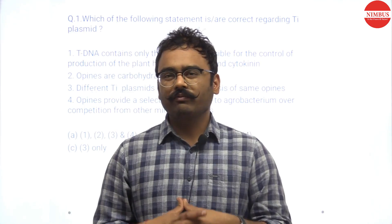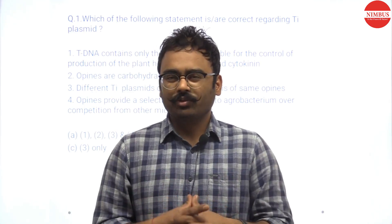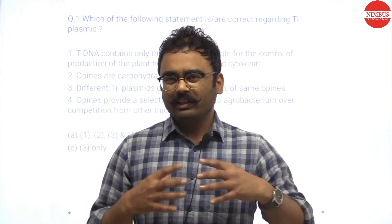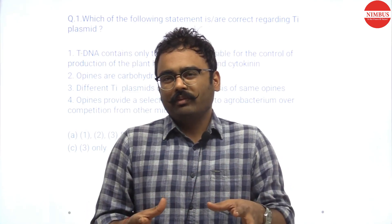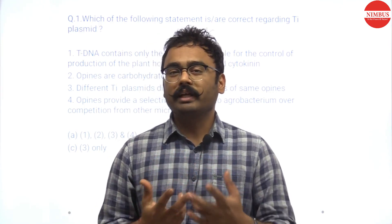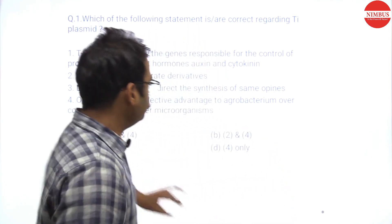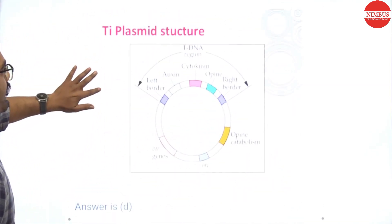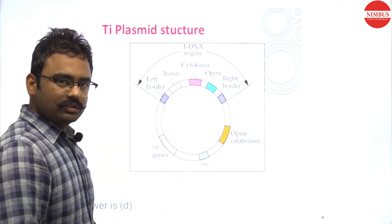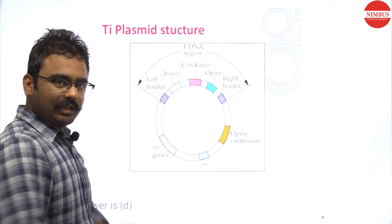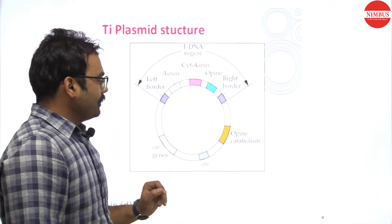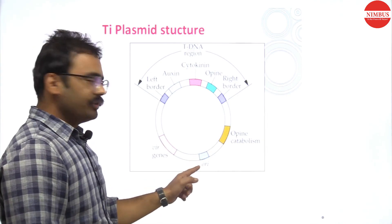We human beings took this Agrobacterium tumefaciens and studied what it is doing and how we can use it. First, you need to understand the mechanism. Agrobacterium tumefaciens has this Ti plasmid. The different components of Ti plasmid include: T-DNA, opine catabolism genes, origin of replication gene, and virulence genes.